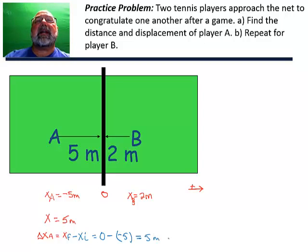So zero minus a negative five is equal to five meters. The displacement of player A to go to the net is five meters. Let's go ahead and do this for player B.